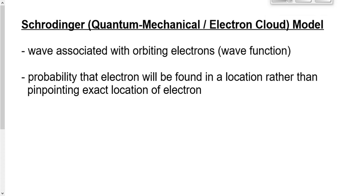The last model of the atom that we're going to talk about and the one that is currently accepted, the one that's probably right, because in 1897 we went from the Dalton model to the Thompson model.